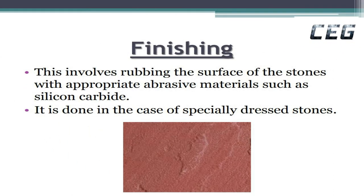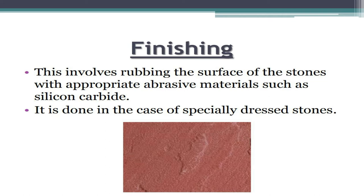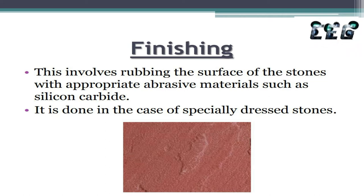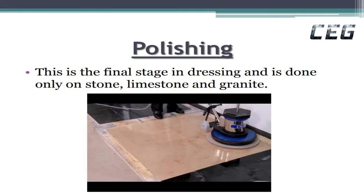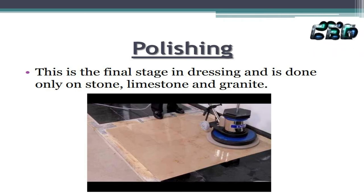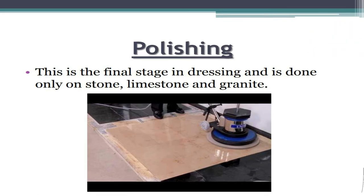Finishing involves rubbing the surface of the stones with appropriate abrasive materials such as silicon carbide. It is done in the case of specially dressed stones. Polishing is the final stage in dressing and is done only on stone, limestone, and granite.